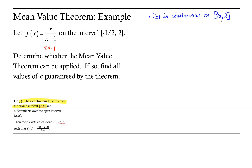The second criteria for the mean value theorem is that the function must be differentiable over the open interval — that is, differentiable over all values of x between negative one-half and 2. It's important to note that rational functions are differentiable on their domain. For this particular rational function, the domain is all real numbers with the exception of x equals negative 1. Since negative 1 is not an element of the interval from negative one-half to 2, f of x is differentiable on the open interval from negative one-half to 2.